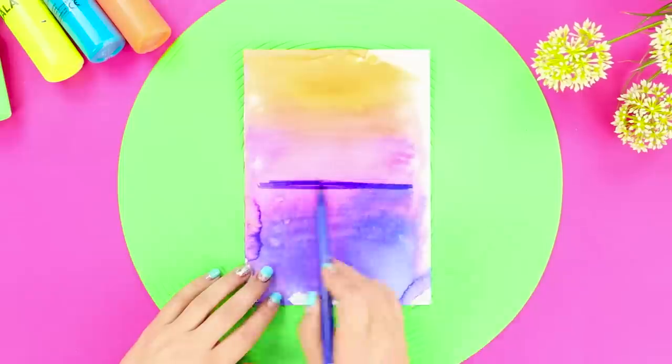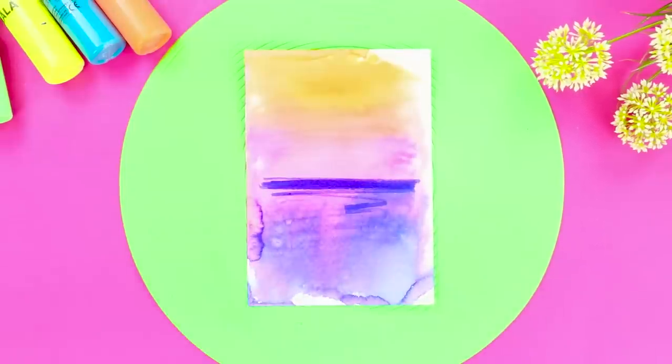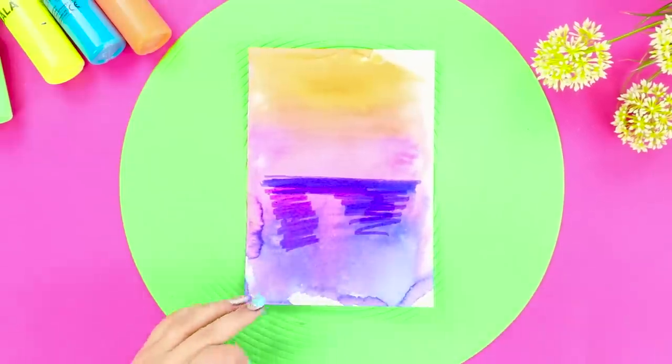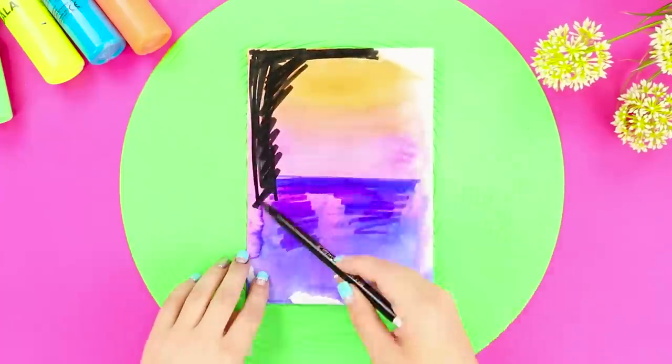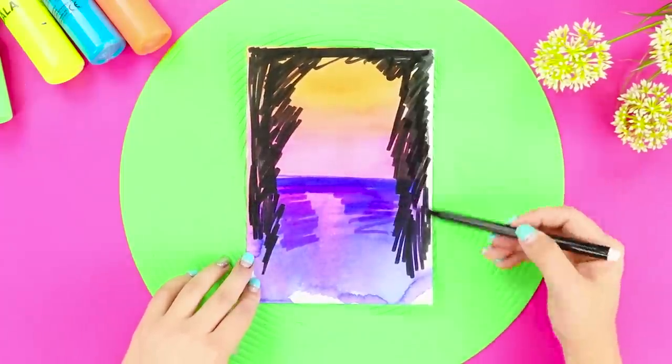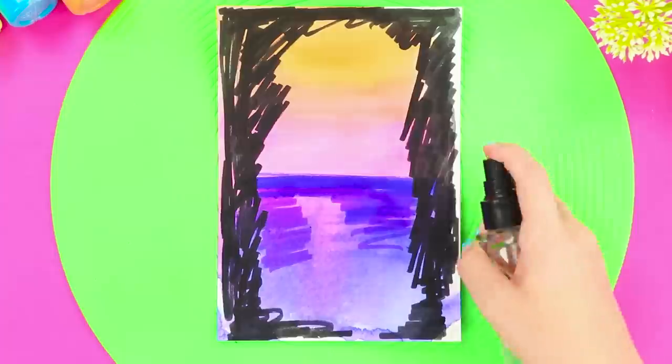When the paint is dry, add some more bright colors. Paint them on so that the center of the sheet gets a rich strip of color. And add a black frame around it. Spray the image again!